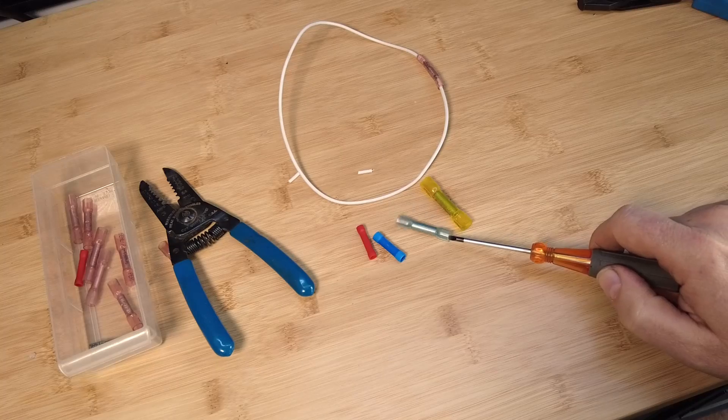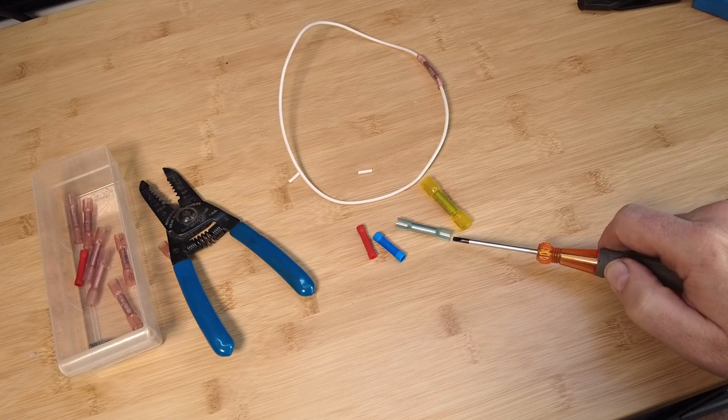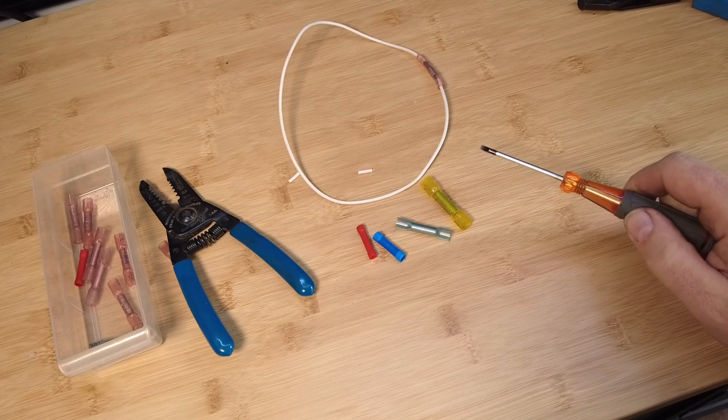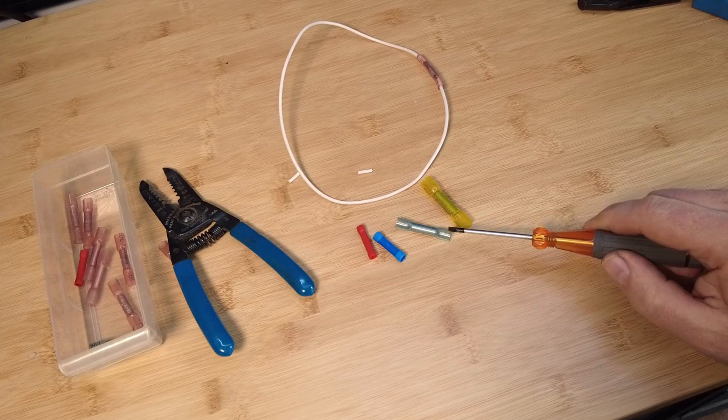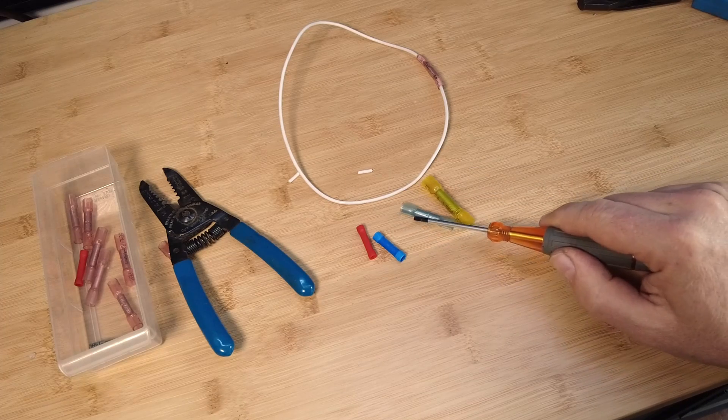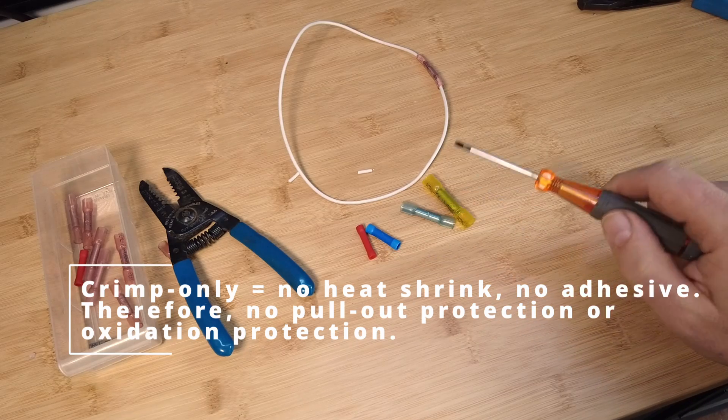I'll tell you a little bit about why we use these connectors. These connectors are the only ones that the Yacht Manufacturing Association in North America allows. If it's a crimp connector, it's the heat shrink adhesive ones. Those are the only ones that they allow. They don't allow the use of these crimp only ones for the reasons that we've discussed.